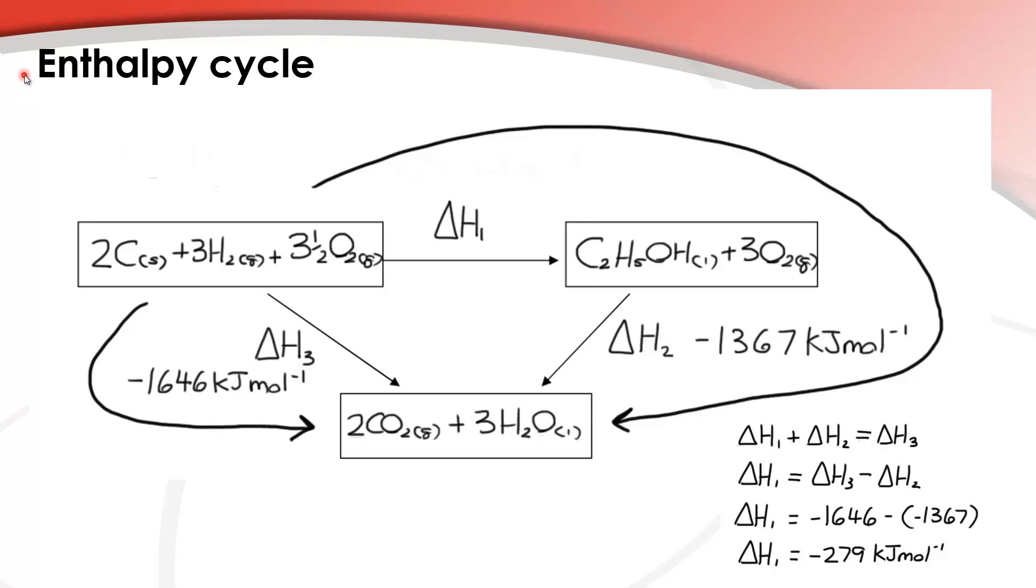Next we'll have a look at an enthalpy cycle. In this enthalpy cycle we have carbon, hydrogen and oxygen, and if we go this route they are combining to form ethanol, this is ethanol C2H5OH, and then we're burning the ethanol with oxygen and the products, if you follow this arrow, are going to be carbon dioxide and water. So if we go this way, first of all we are forming ethanol from its elements and then we're combusting ethanol with oxygen to give us these products here.